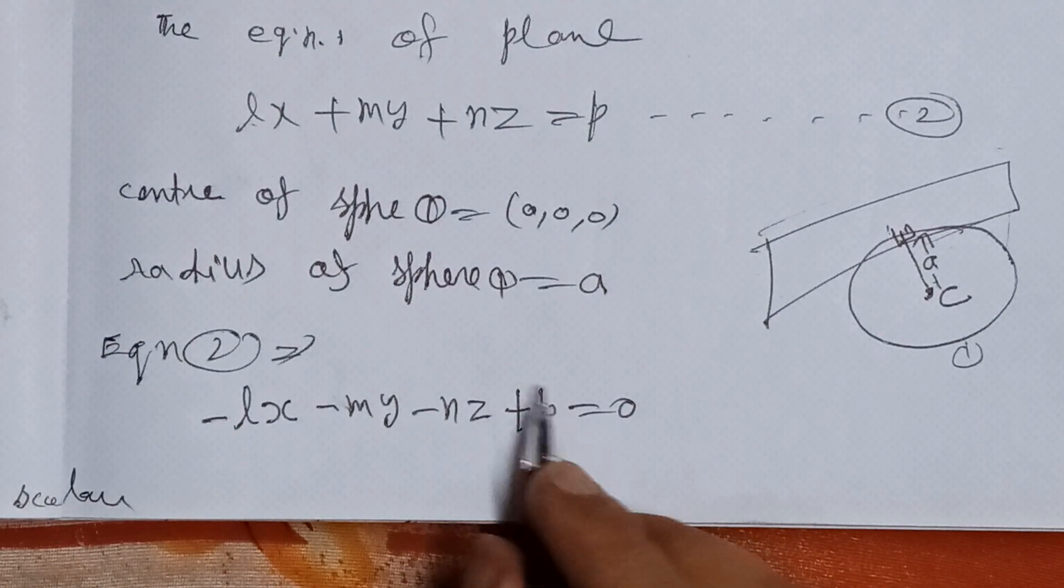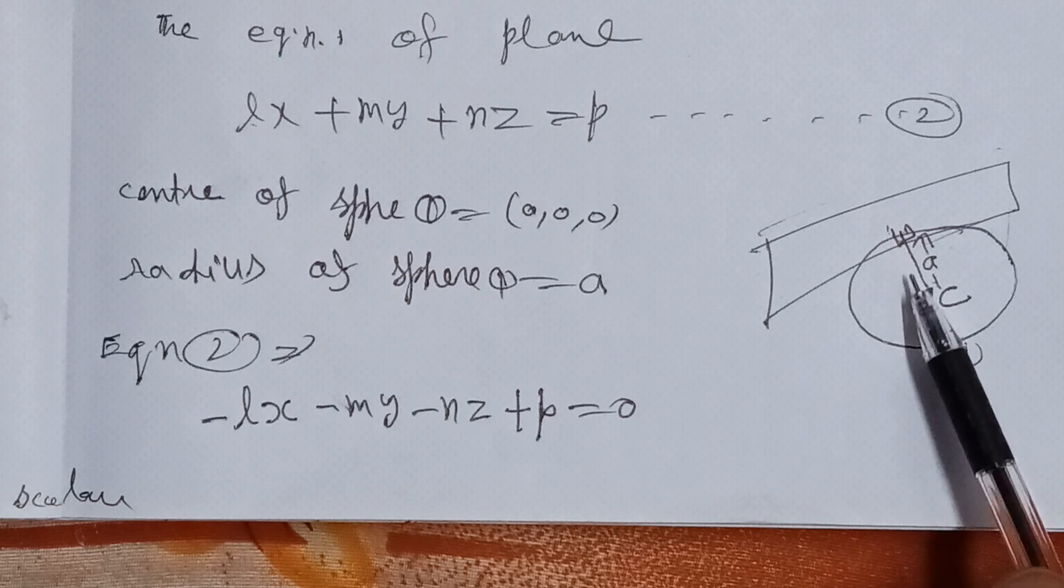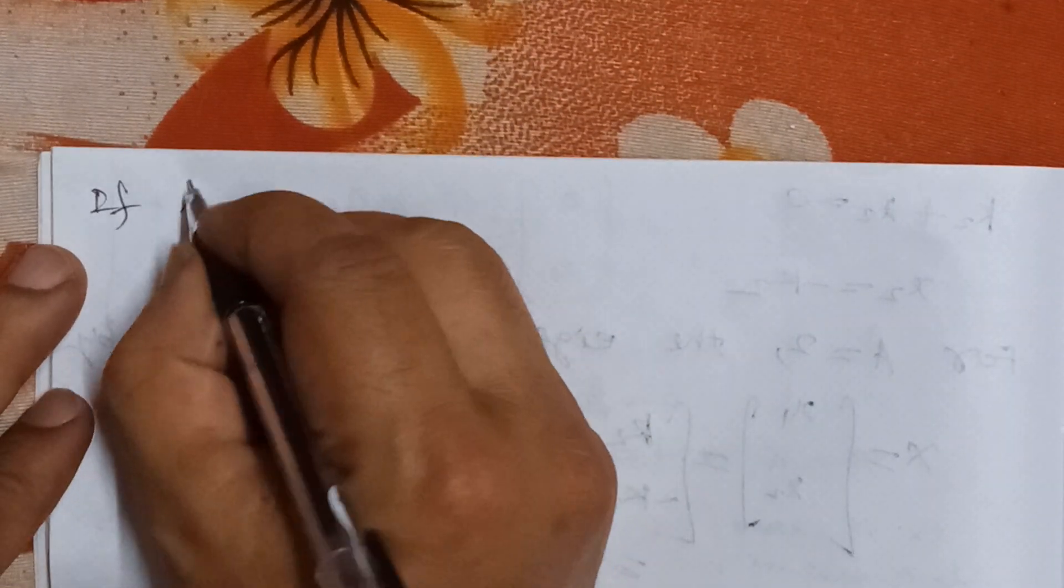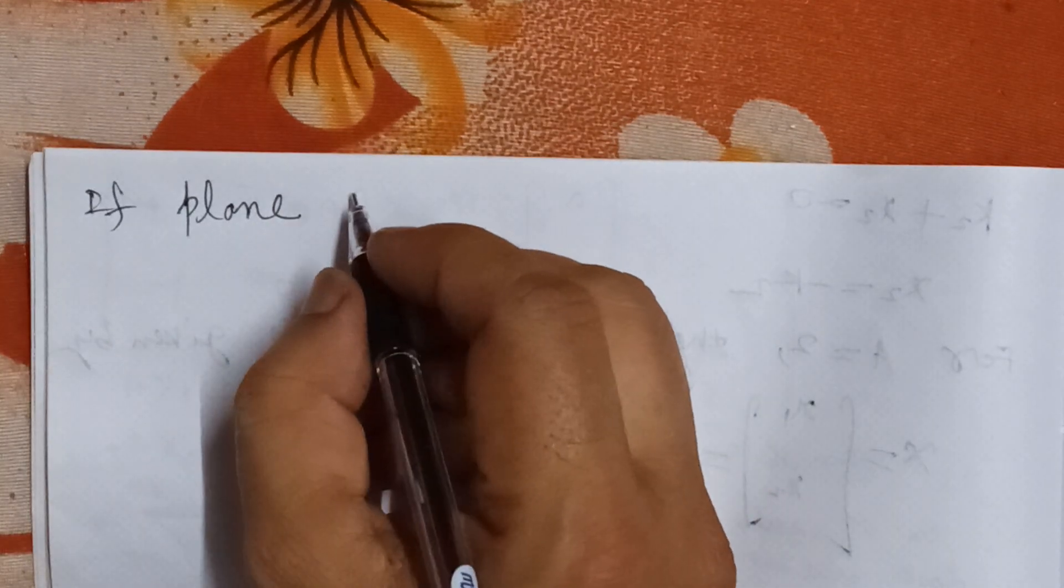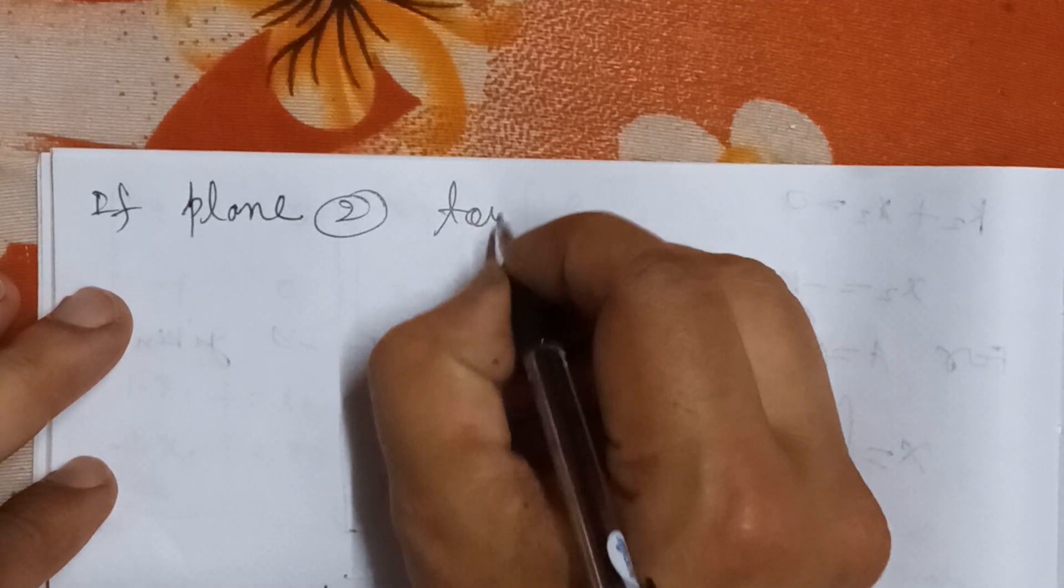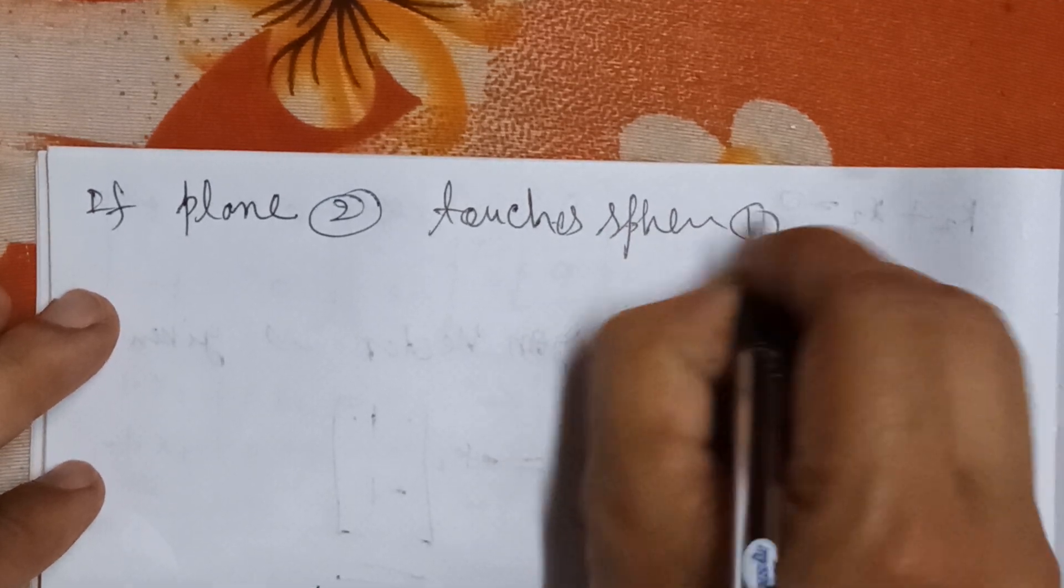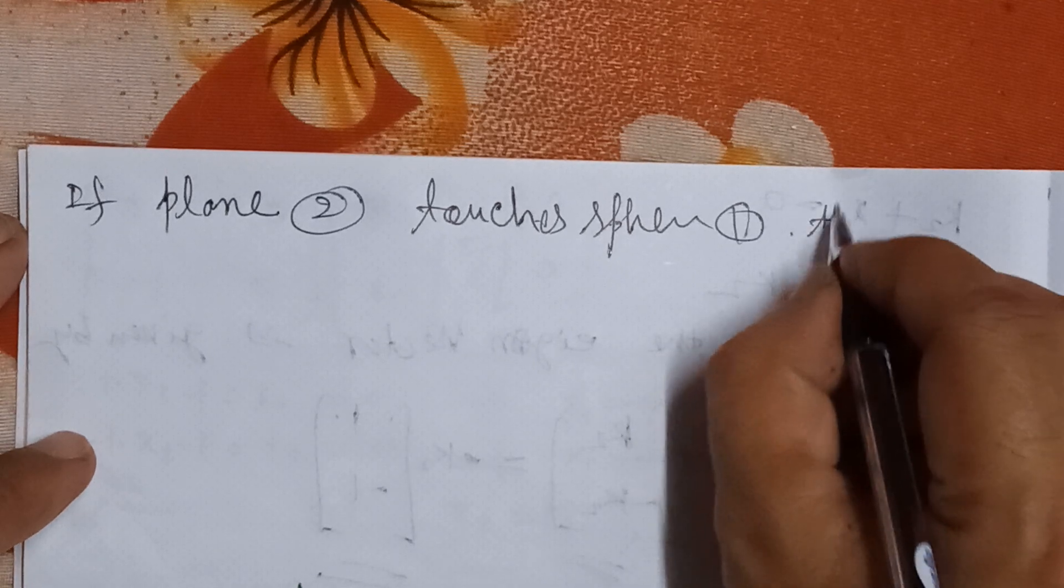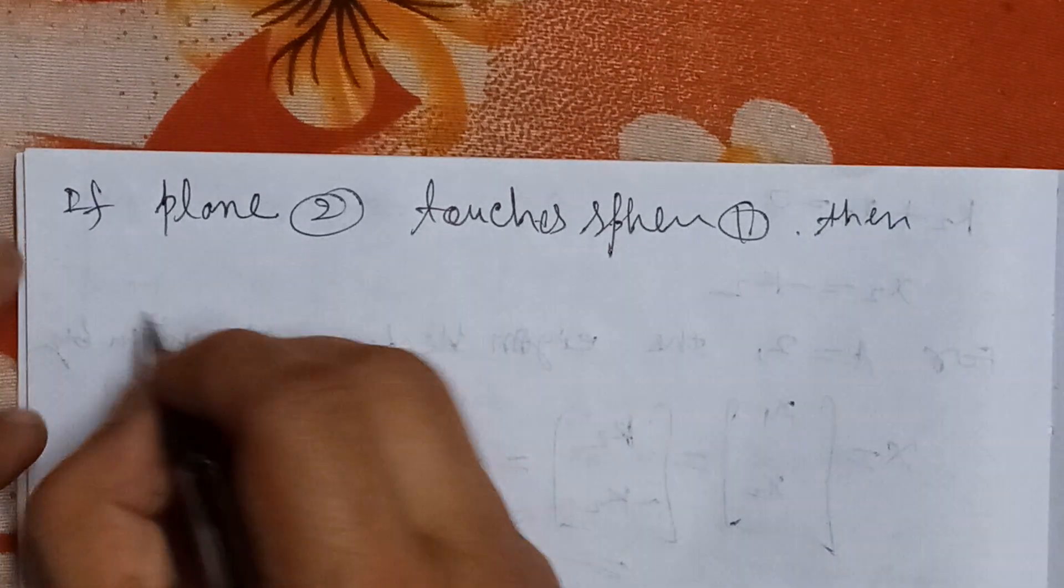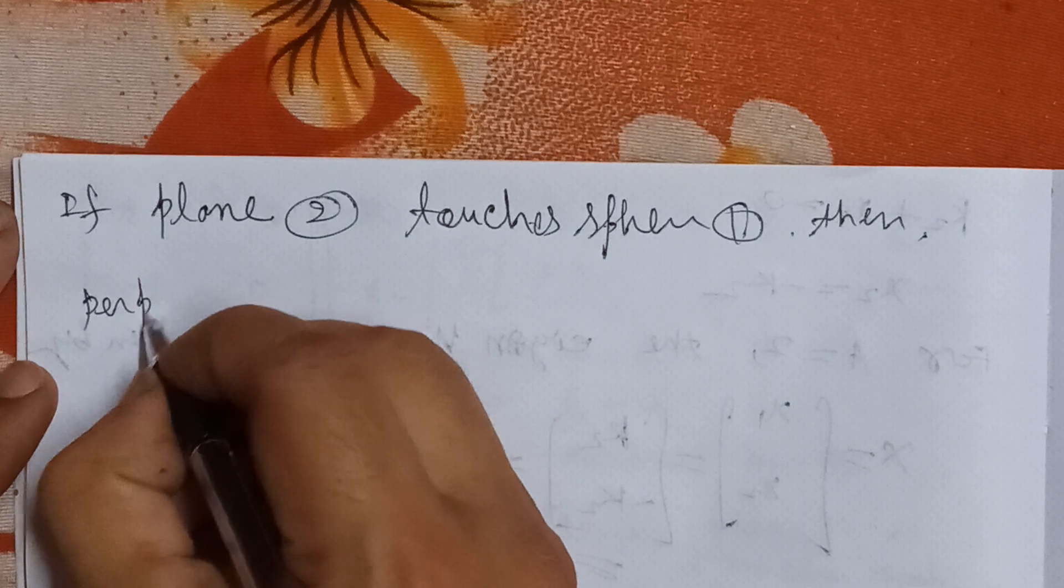If plane 2 touches sphere 1, then the perpendicular distance from the center of the sphere to the plane equals the radius of the sphere.